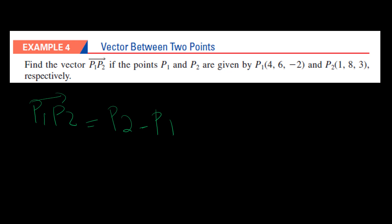So we do P2 minus P1. Our vector P2 is (1, 8, 3), and we do minus (4, 6, -2). Now the vector we have is: 1 minus 4, 8 minus 6, and 3 minus negative 2, which gives us (-3, 2, 5).